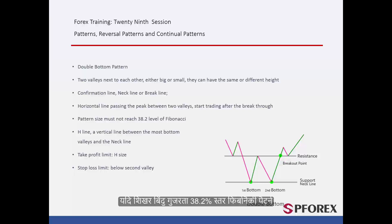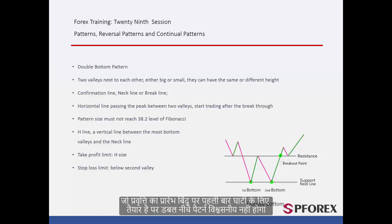If the peak point passes the 38.2% level on the Fibonacci pattern, which is drawn from the start point of the trend to the first valley, the double bottom pattern will not be reliable.